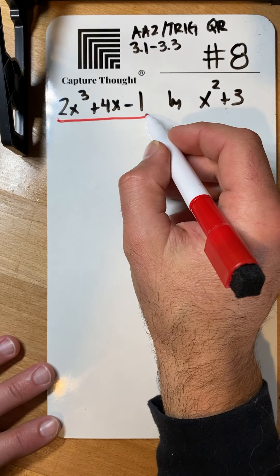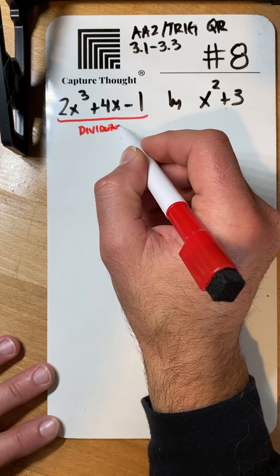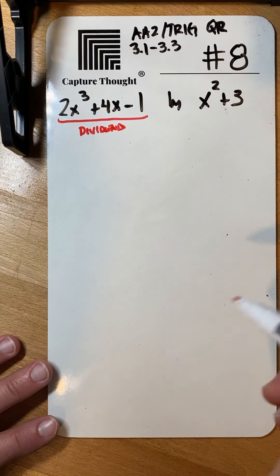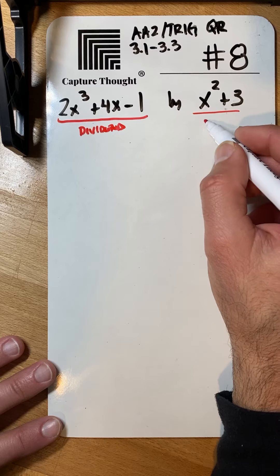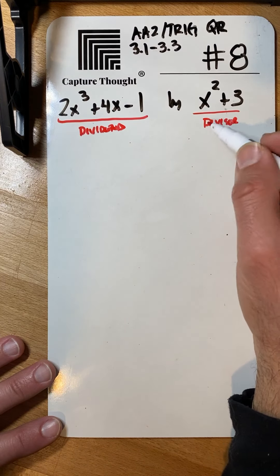Number one, this is called your dividend. This is the one that goes inside underneath your division symbol. This is your divisor, and that goes on the outside.